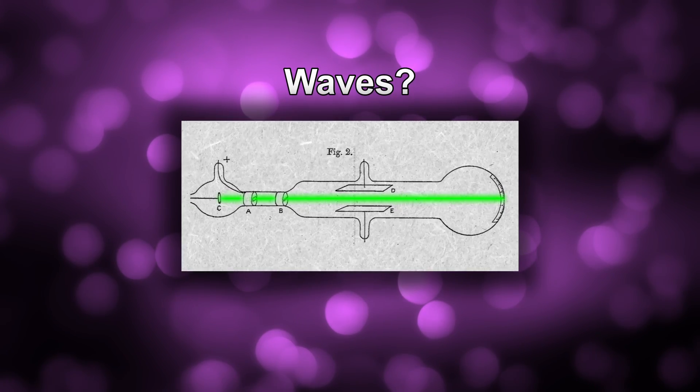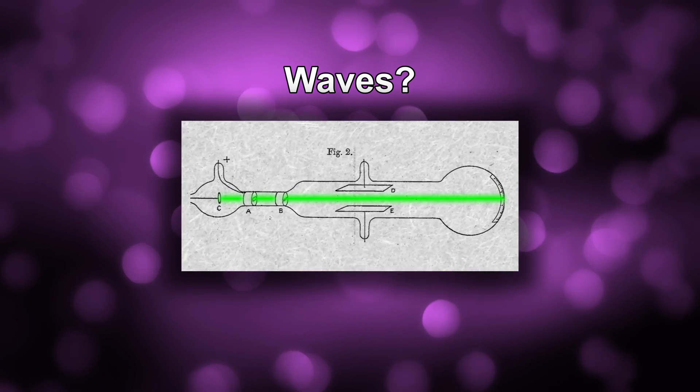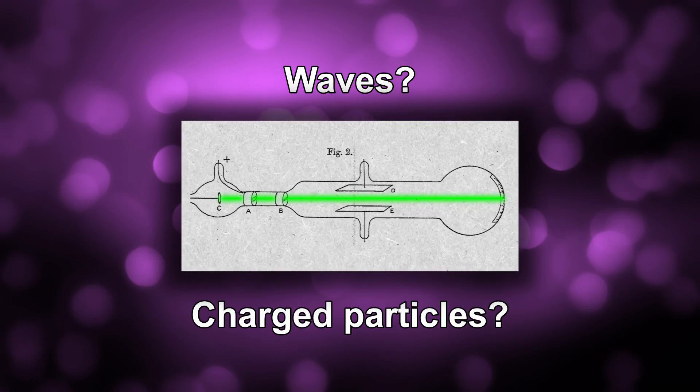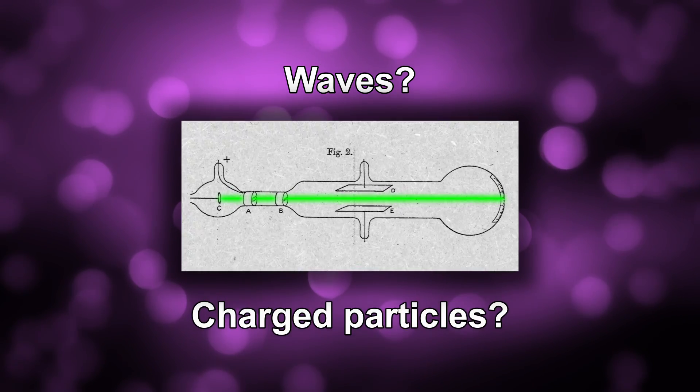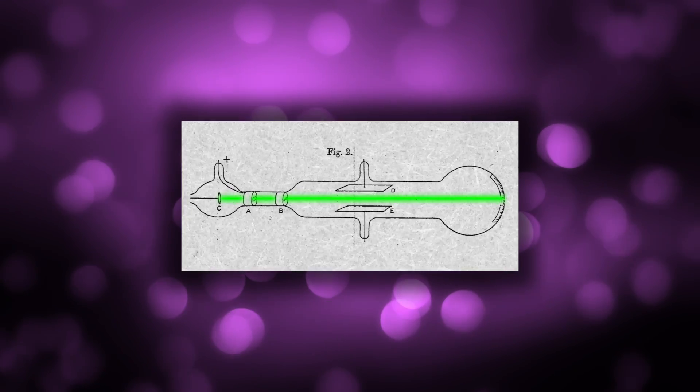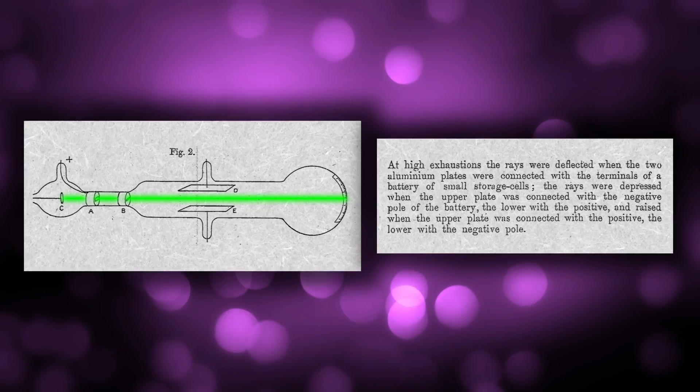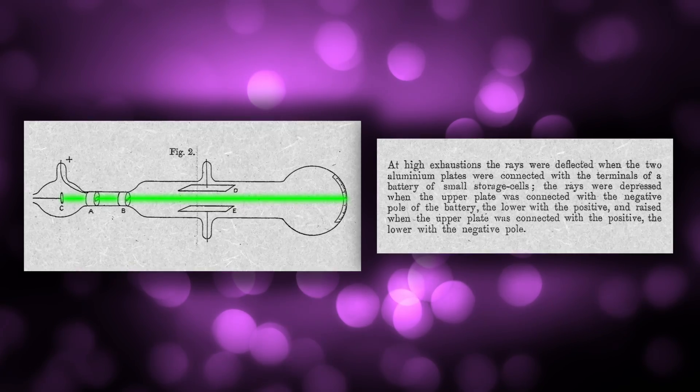Some thought that they were waves as they traveled in straight lines and were unaffected by gravity. Others thought they were charged particles as they could be deflected by a magnetic field. In Thompson's publication, he described what happened as follows. At high exhaustions, meaning very low pressure, the rays were deflected.